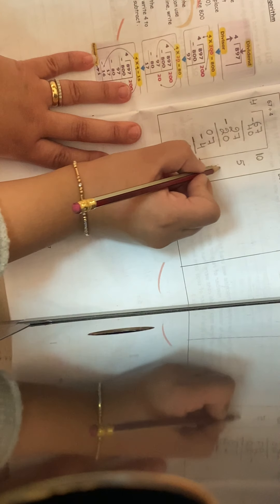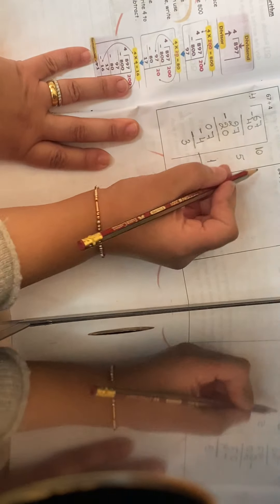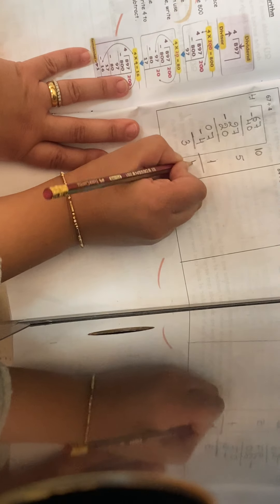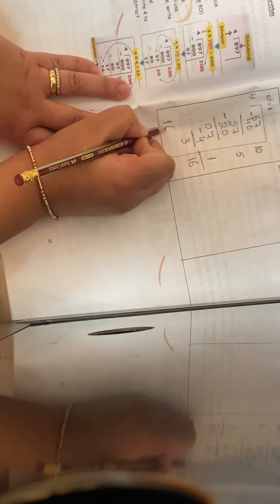I will do minus. 7 minus 4 is 3. Now, I will add all those numbers that I get. 10 plus 5 plus 1 is 16. And I still have remainder 3. So the answer is 16 with a remainder 3.